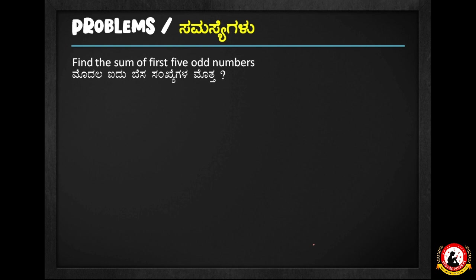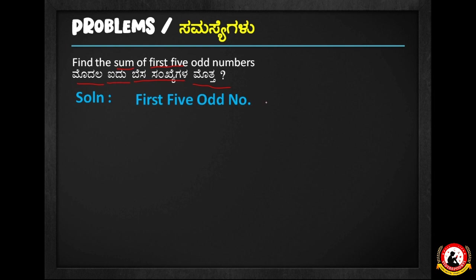Now we will ask: find the sum of the first 5 odd numbers. The first 5 odd numbers are 1, 3, 5, 7, and 9. You all know the first five odd numbers.